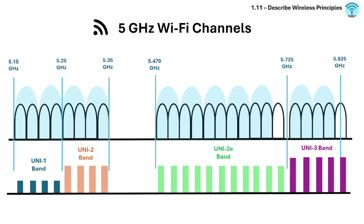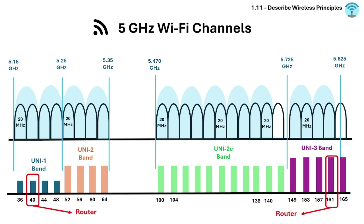Examples of common non-overlapping 5 GHz channels are 36, 40, 44, and 48 for the lower band, and 149, 153, 157, and 161 for the upper band. These channels are non-overlapping at 20 MHz width, and many routers can use 40 or 160 MHz widths for faster speeds but with fewer non-overlapping options.